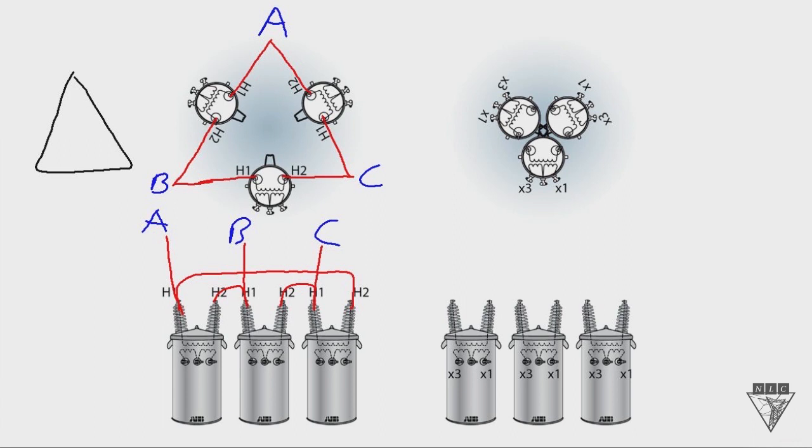With a delta connection it's a phase-to-phase connection. With transformers, in order to make them work you have to have a potential difference across the coil. You can do this in one of two ways: either a phase-to-phase connection or a phase-to-ground connection. So for a delta it's a phase-to-phase connection. Now let's move over to the secondary side.